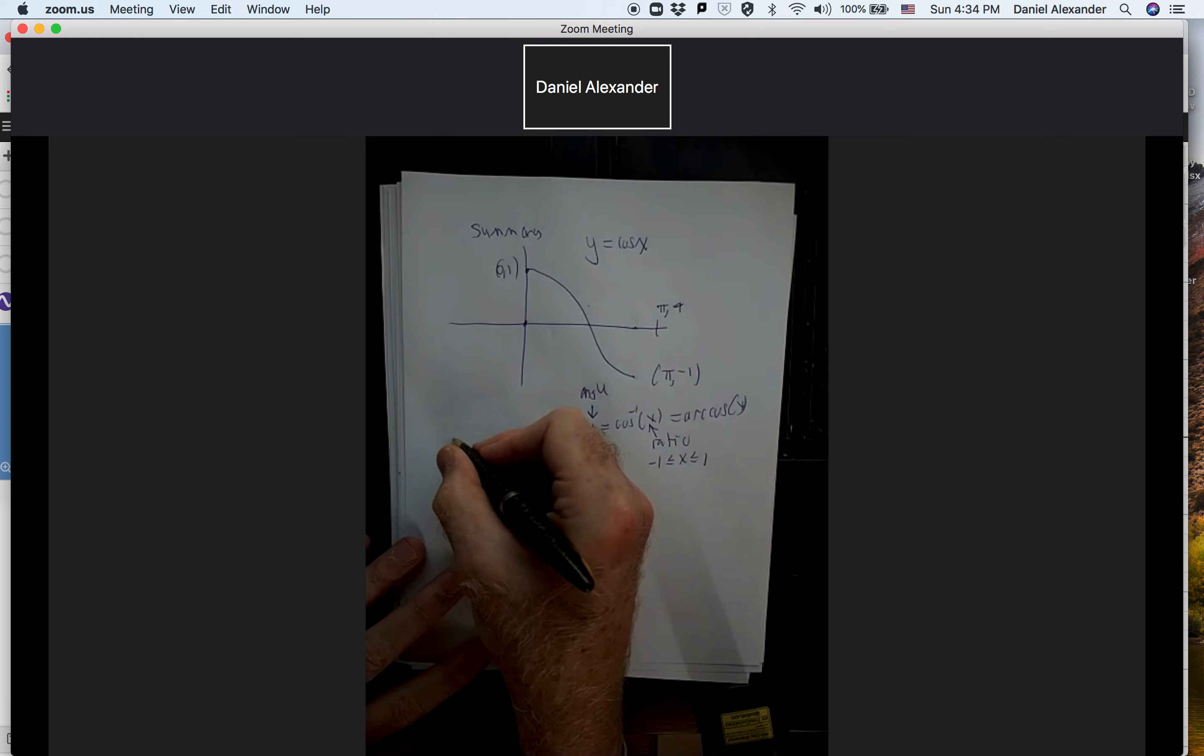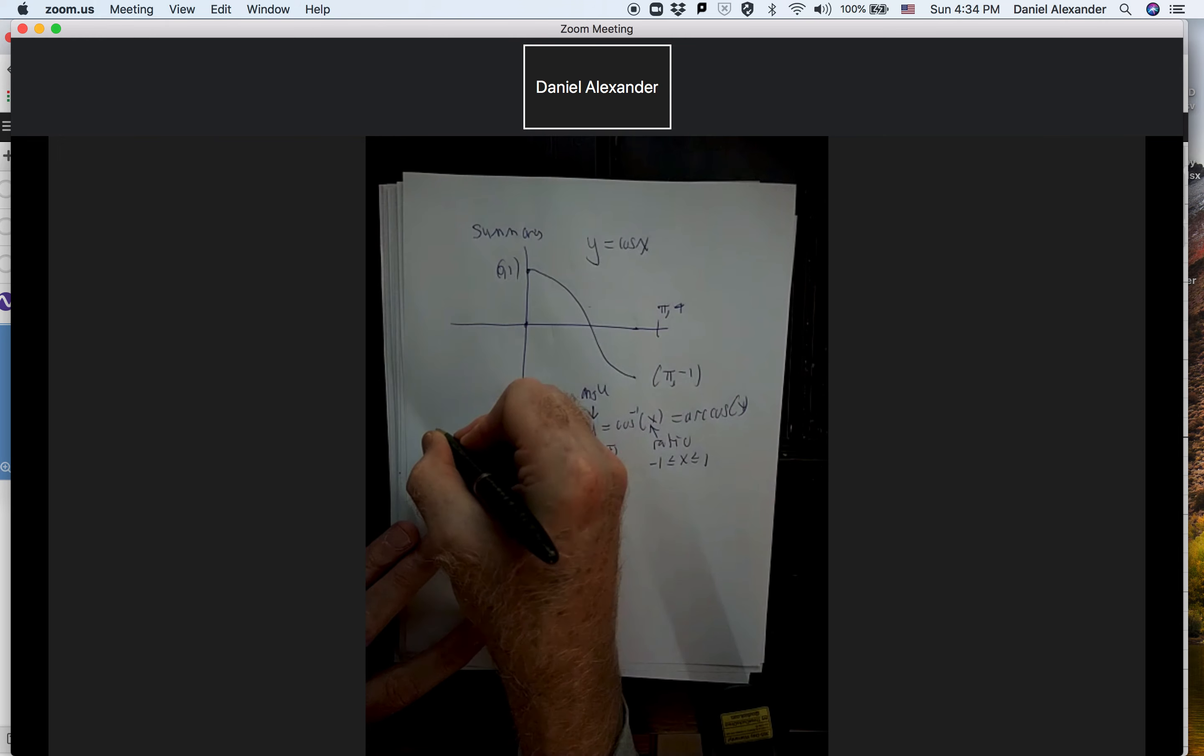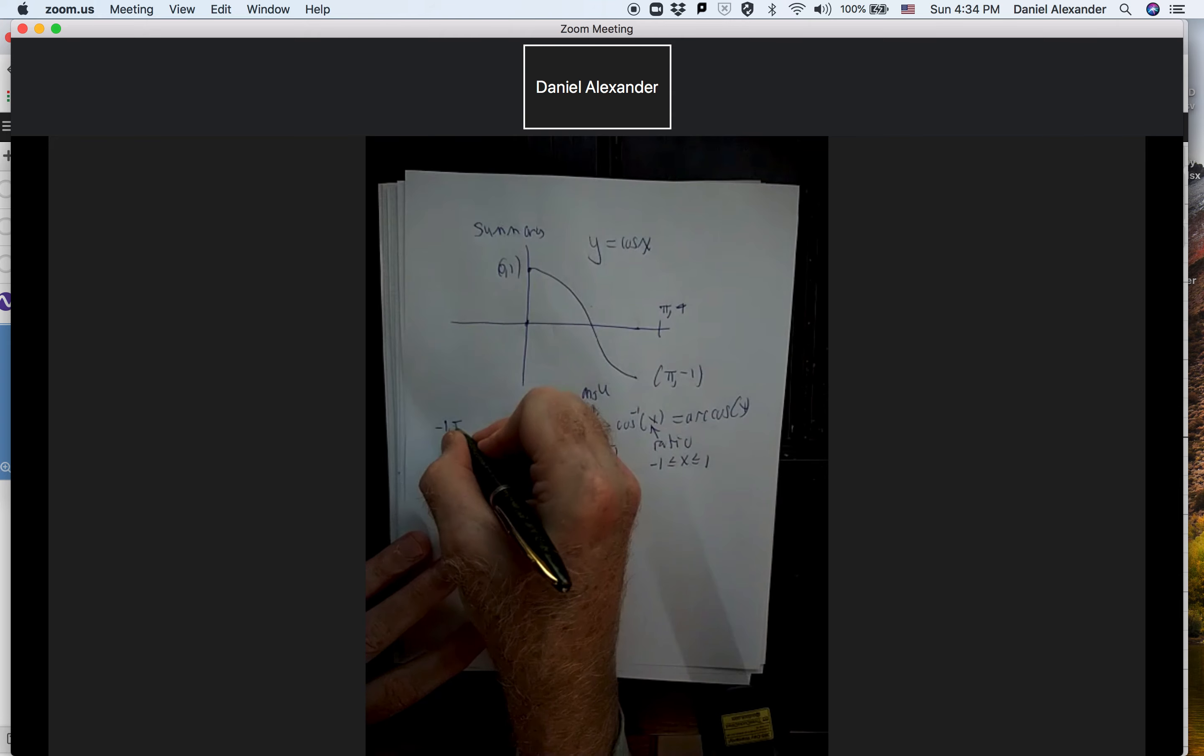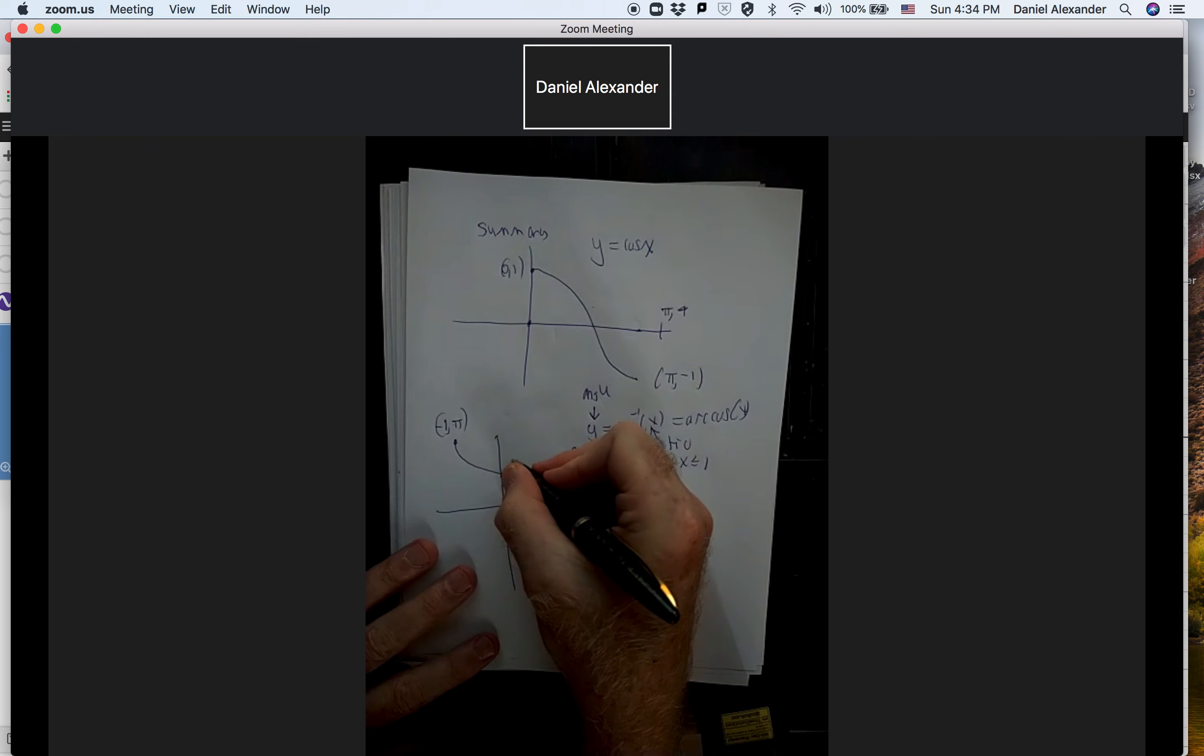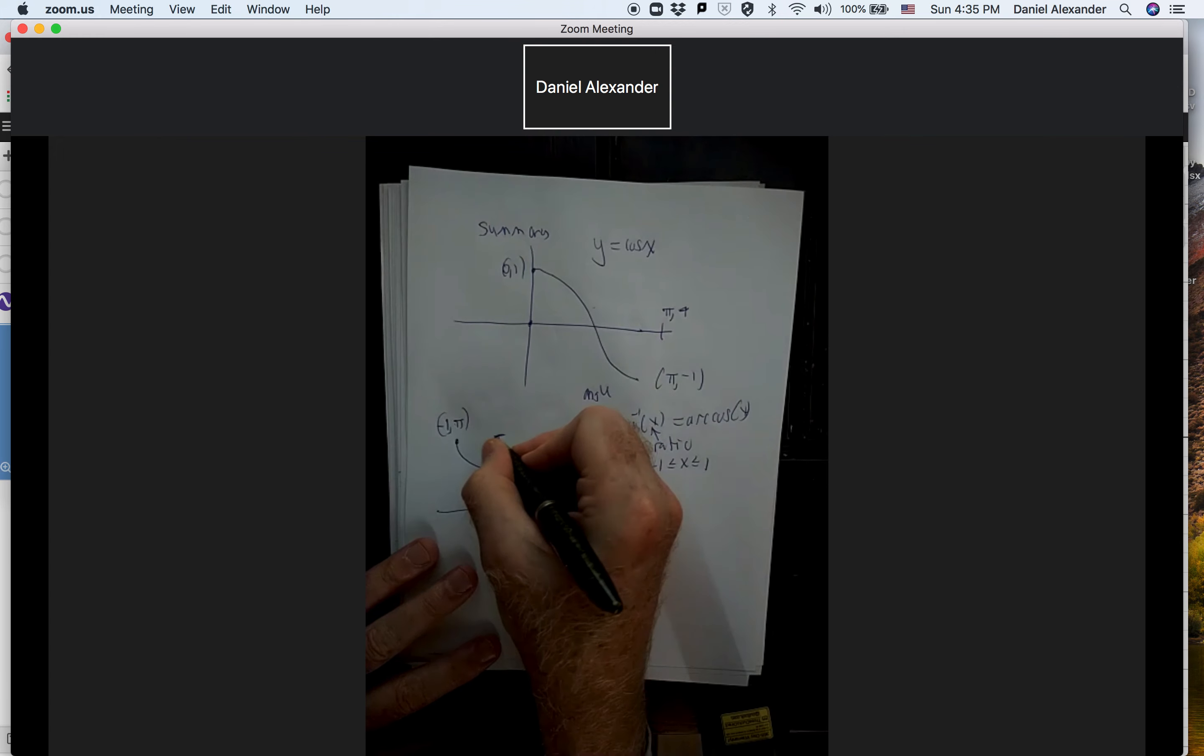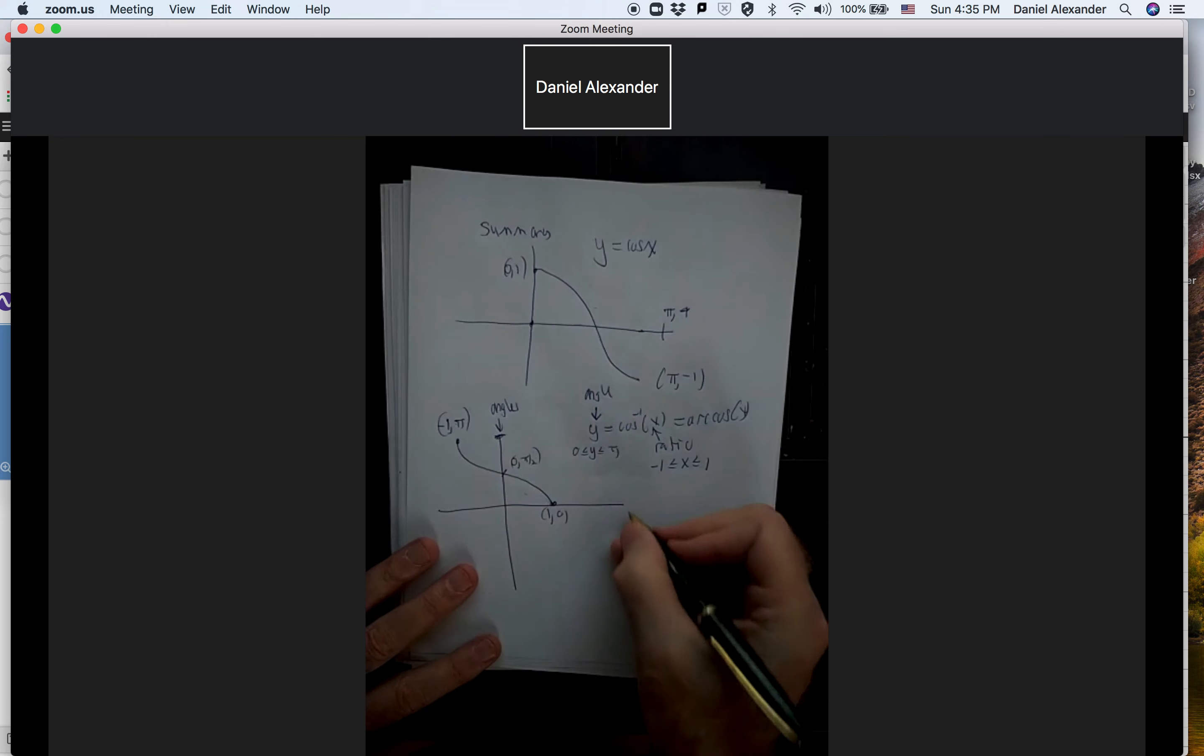The angle is between zero and pi. And we saw that the graph, I'm not going to go into it, but we saw that the graph looked like that. Where this would be minus one pi. This would be zero pi over two. And this would be plug in one, we get back to zero. So again, these are the angles. This is the ratio.